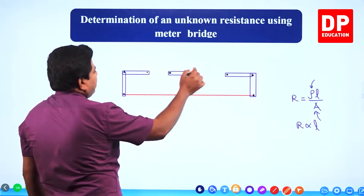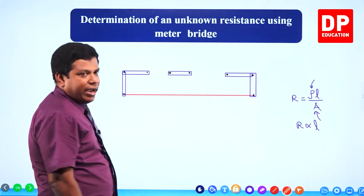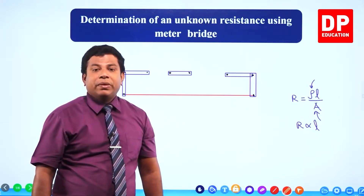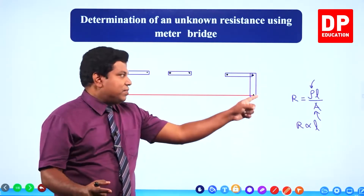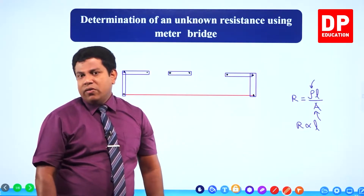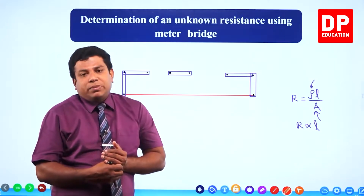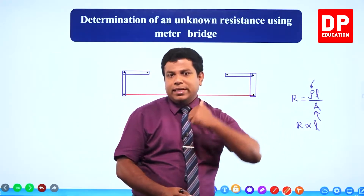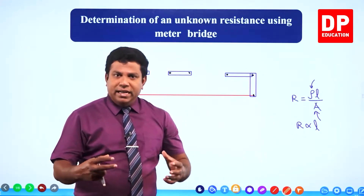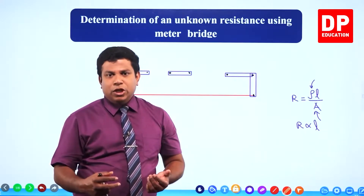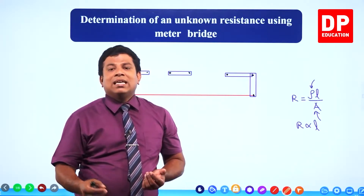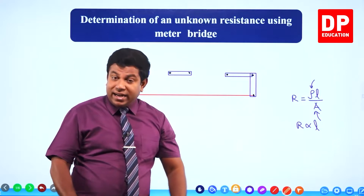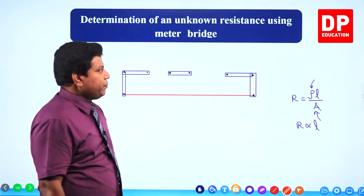There are wide metallic strips here. Why do we use wide metallic strips? It has even been tested in exam questions. Because the resistance of these strips must be negligible — we don't consider the resistance of those connecting strips. By increasing the cross-section, when A increases, R will reduce. Therefore, we use wide copper strips to reduce the resistance so that the resistance of these connecting strips need not be considered in the calculations.